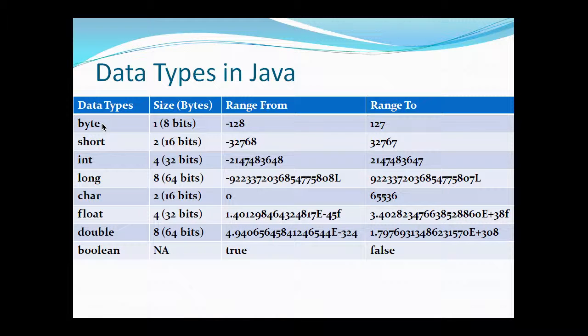If you talk about the size of these data types, byte holds one byte or eight bits. The range through which byte varies is from minus 128 to 127.